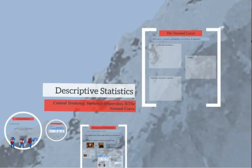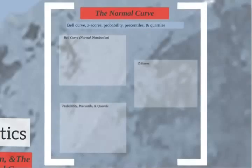This will finalize our last piece of descriptive statistics and this slightly more advanced piece. For the normal curve, we're going to be going over the bell curve, z-scores, probability, percentiles, and quartiles.